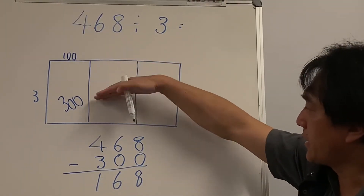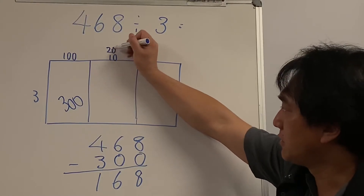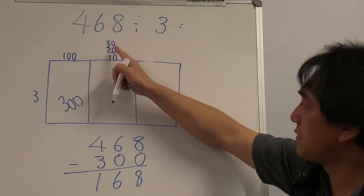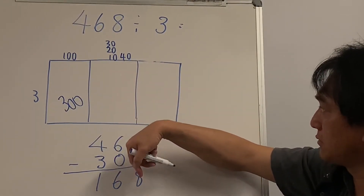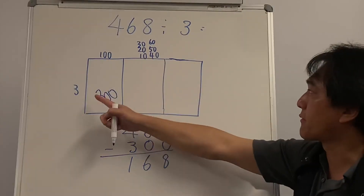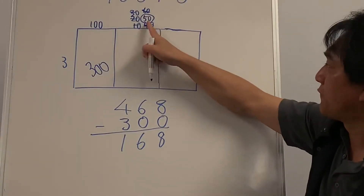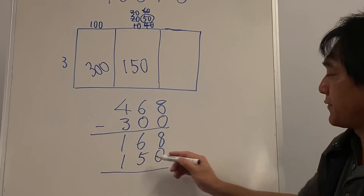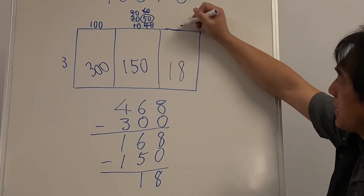Now the tens column: 3 times 10 is 30, 3 times 20 is 60, 3 times 30 is 90, 3 times 40 is 120, 3 times 50 is 150 — I have 168 left, so that fits. 3 times 60 is 180 — too many. So I'll use 50: 50 times 3 is 150. I just used 150 cupcakes, and 18 are left.